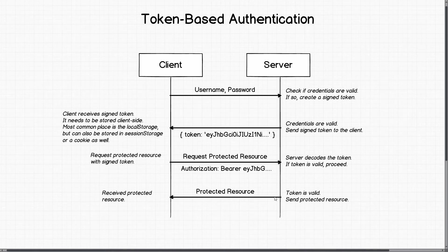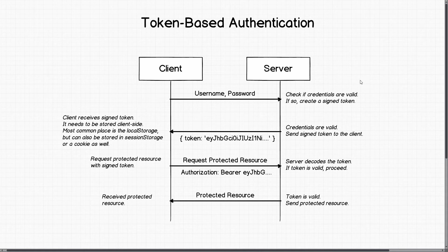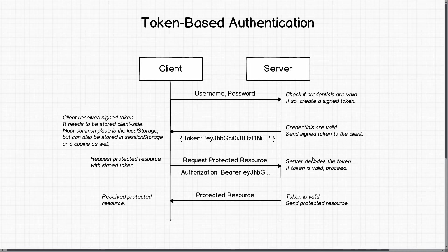If the token is valid, the server treats the client as authorized and sends back the protected resources. One of the biggest differences from cookie-based authentication is that token-based authentication is stateless — the server does not keep a record of which users are logged in or which tokens have been issued. Because of that, the server has less work to do and is more scalable.